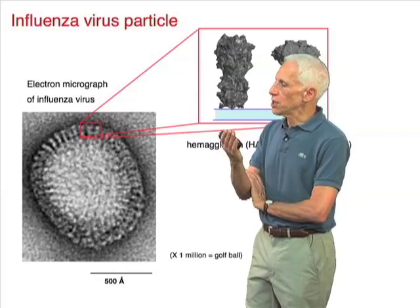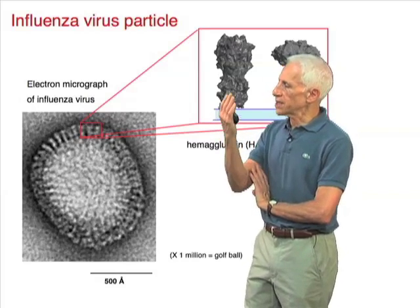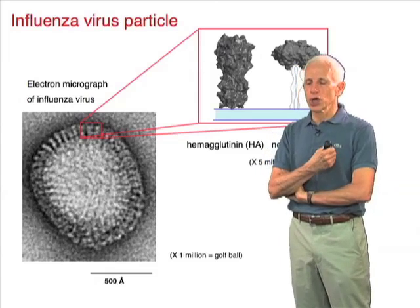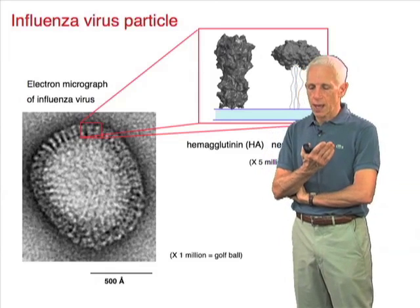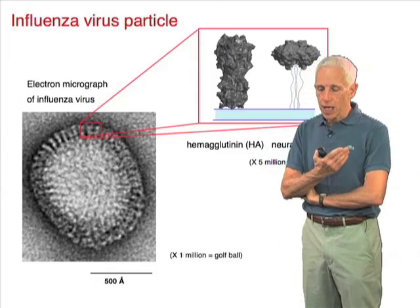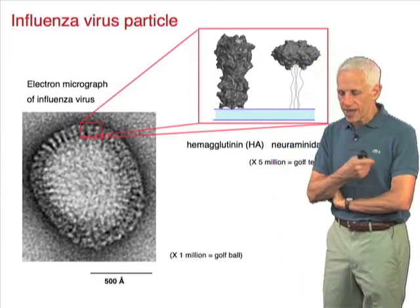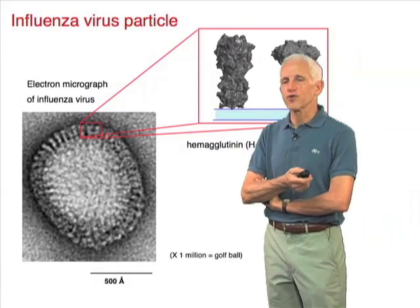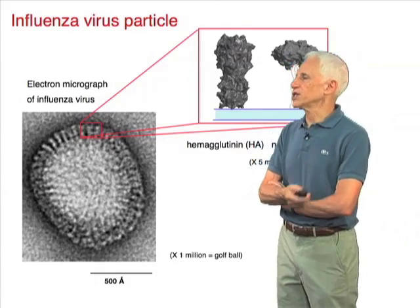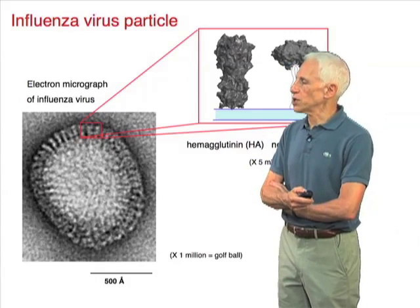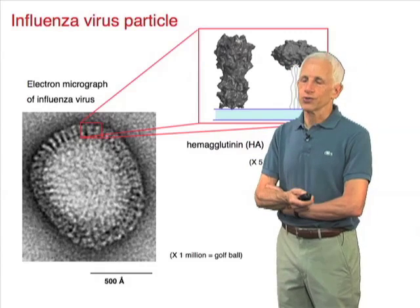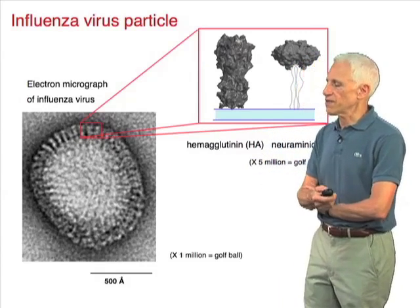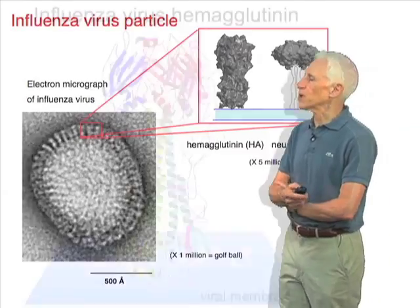The hemagglutinin is the protein that undergoes a low pH-triggered conformational rearrangement to drive fusion. We'll be hearing quite a lot about that in the next part.